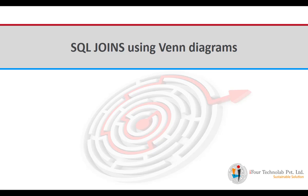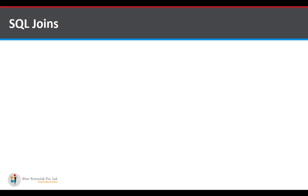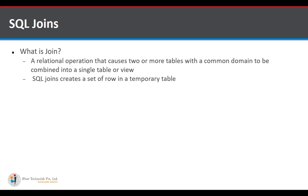Hello everyone, I am Akash Patel working in i4 Technolab Private Limited. Today I am going to explain various types of joins used in SQL. A SQL join is used to combine records from two or more tables in a database. A join is a means for combining fields from two tables by using values common to each — a relational operator that combines tables with a common domain into a single table or view.